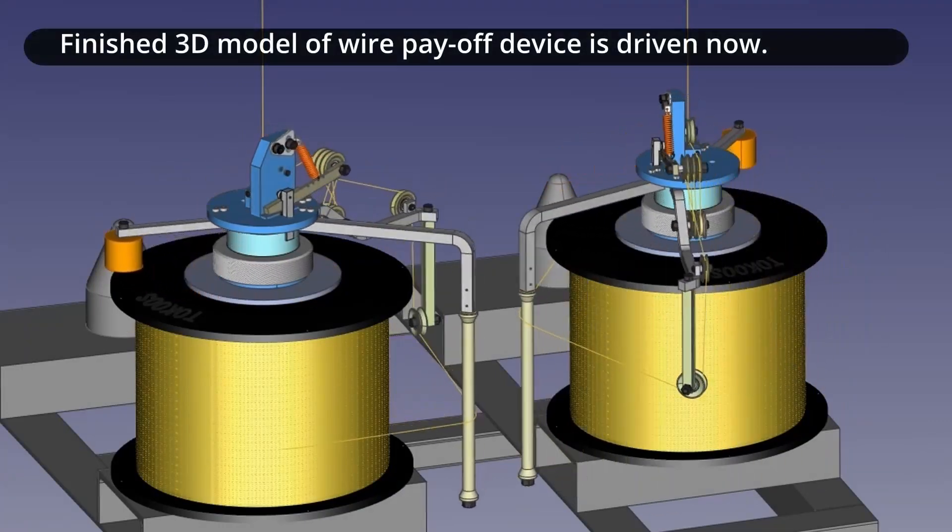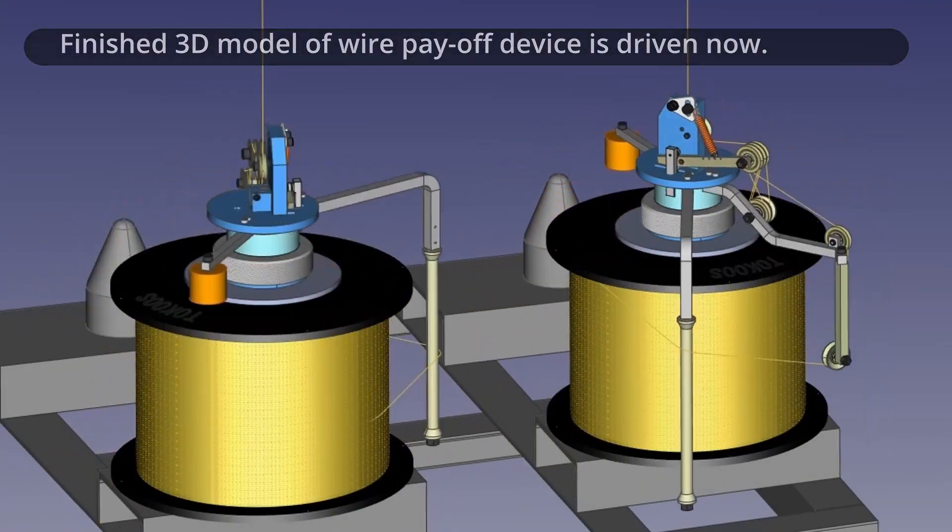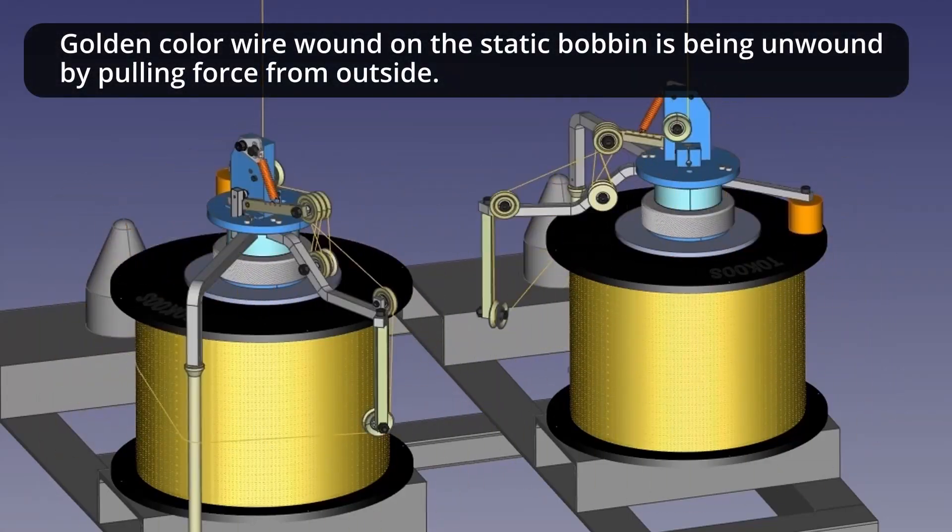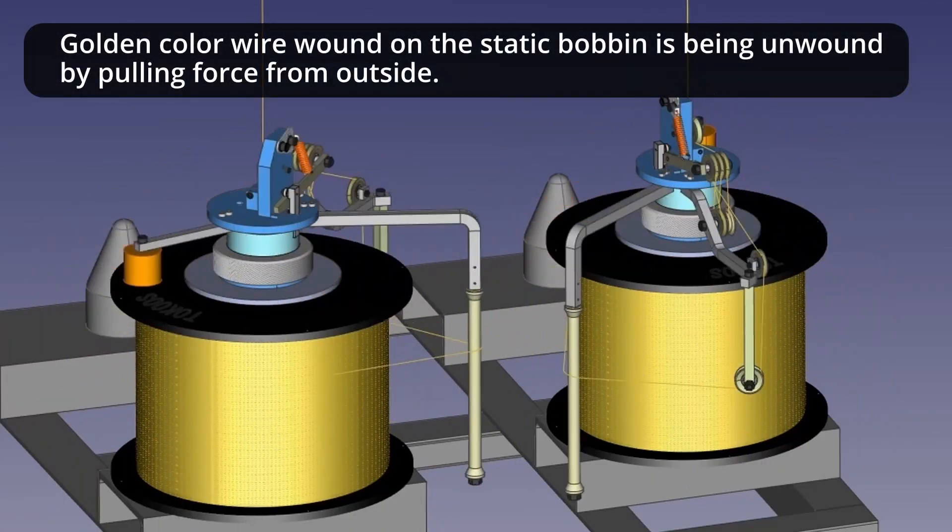Finished 3D model of wire payoff device is driven now. Golden color wire wound on the static bobbin is being unwound by pulling force from outside.